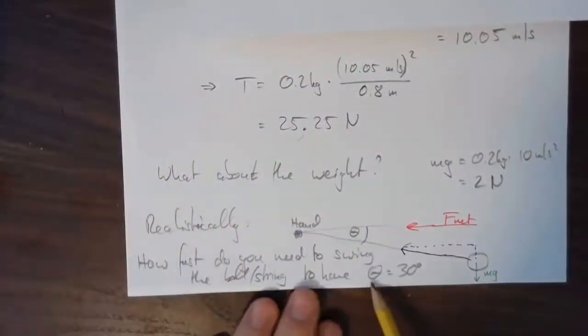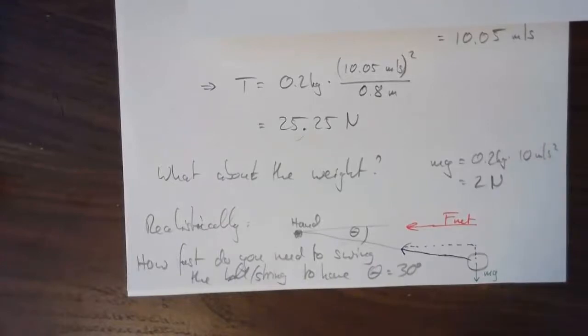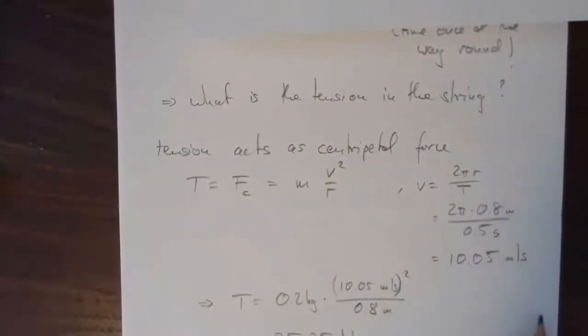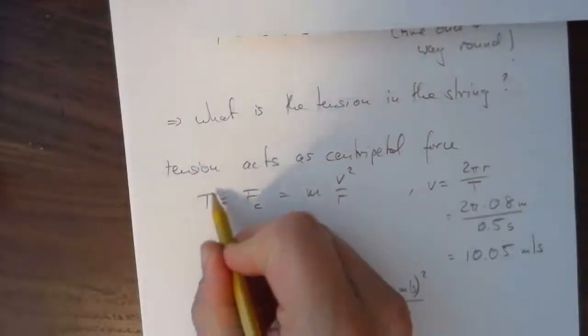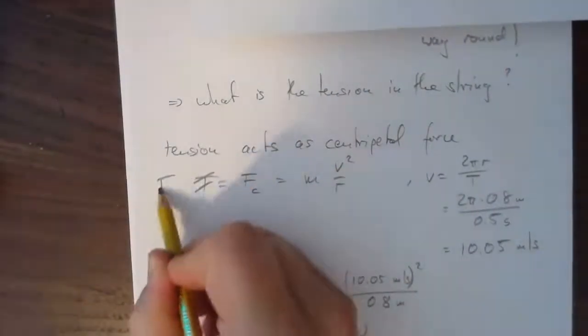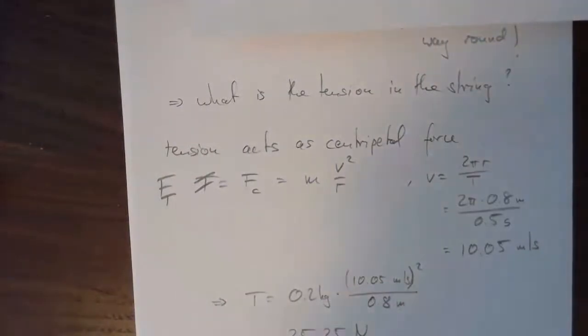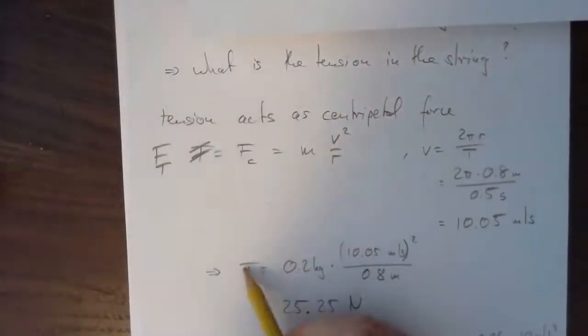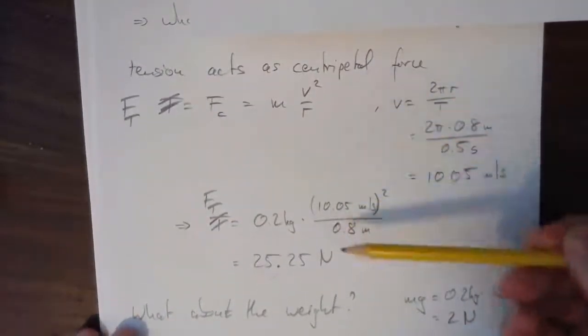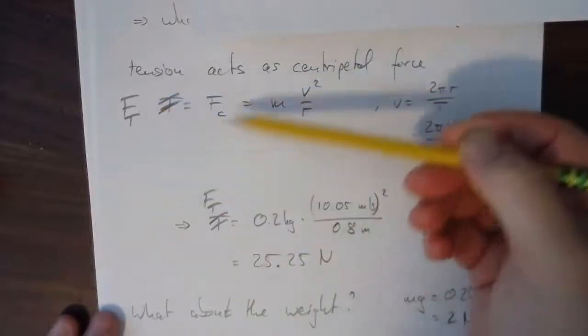I just noticed something confusing: I used T to denote both the period and the tension. That makes no sense at all — if you were confused, that's totally understandable. Let me fix it: since I called the period T (= 0.5 s), I should call the tension F_T, force of tension. Apologies for the notation clash.